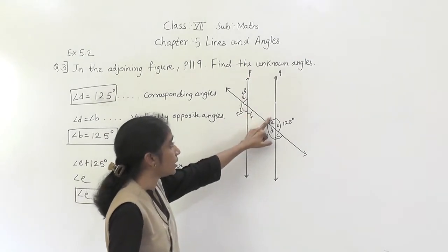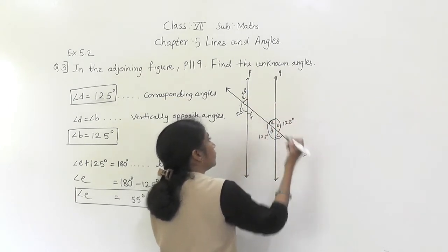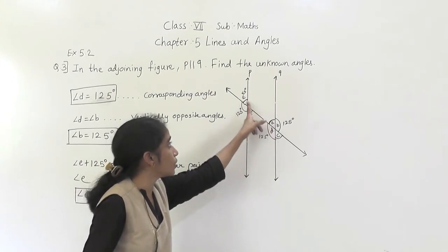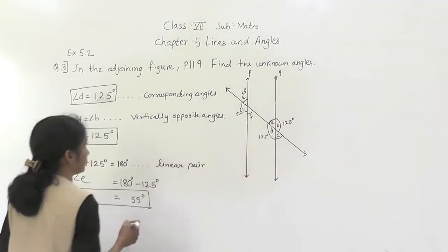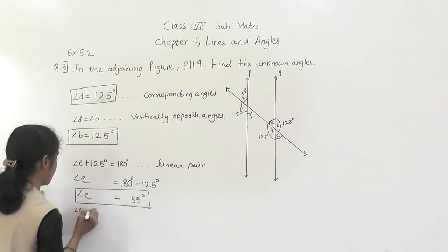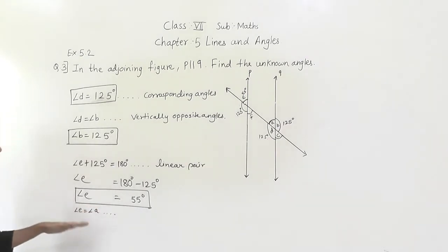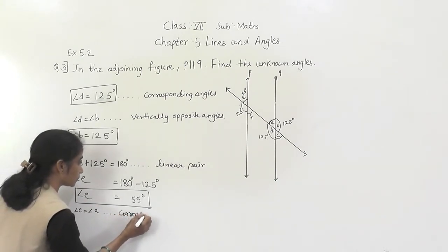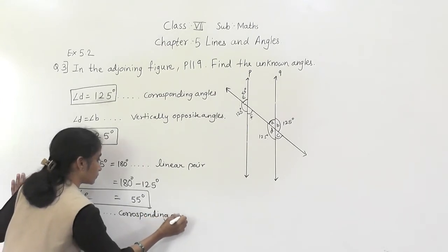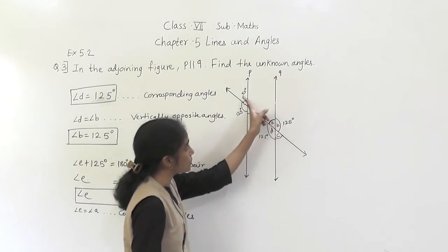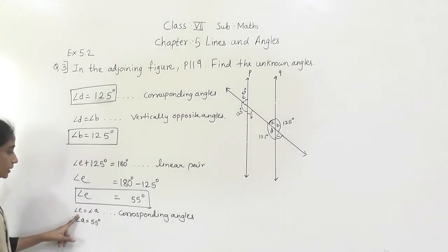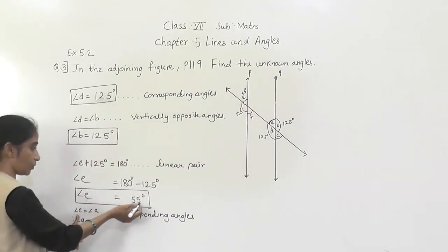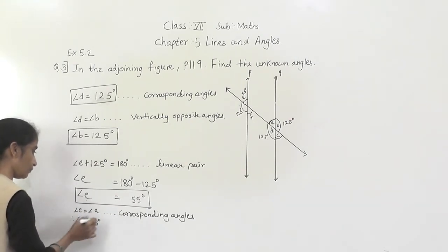Now angle A we can get. Angle E and angle A are both equal because these are corresponding angles. Angle E and angle A are corresponding angles. Angle E is 55 degrees, so angle A is also equal to 55 degrees.